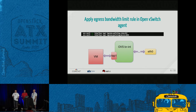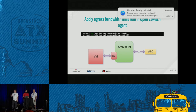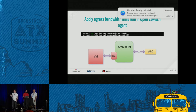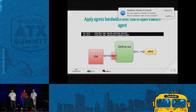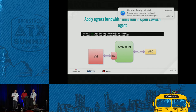In terms of how OpenVSwitch connects a virtual machine to the network, the OVS agent will apply the bandwidth limit rule policy by executing two commands on the OVS VSCTL tool. The first command will configure the bandwidth limit and the second command will configure the burst value if provided by the user.